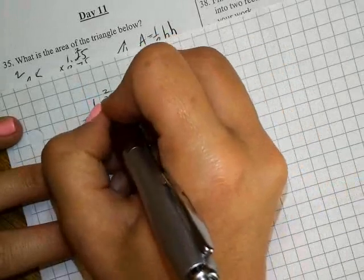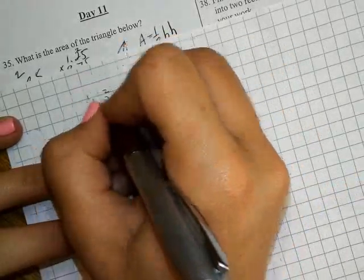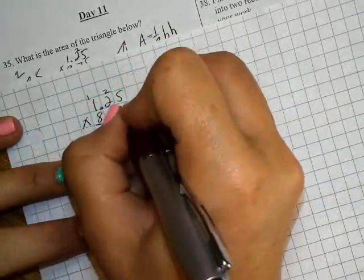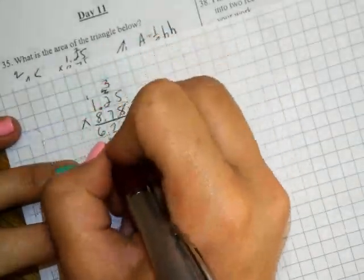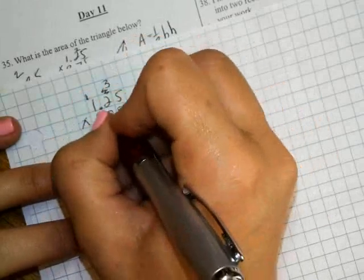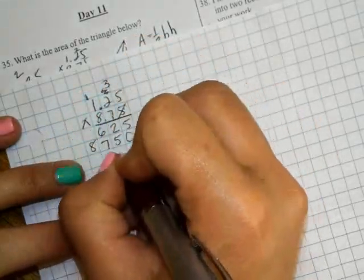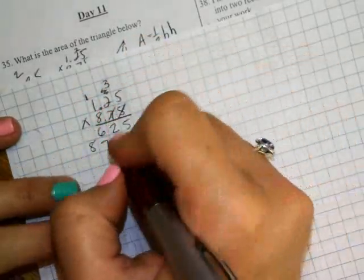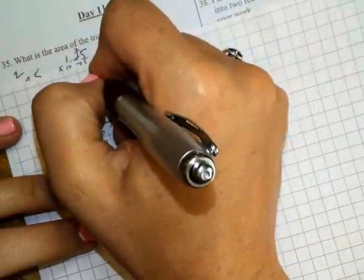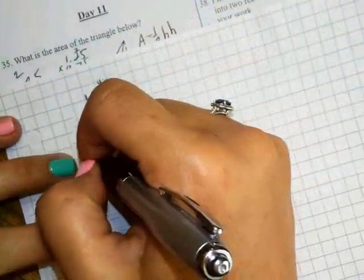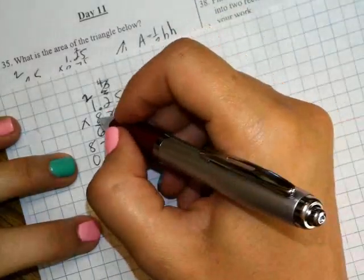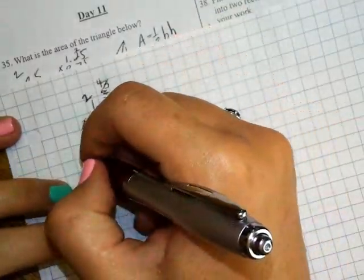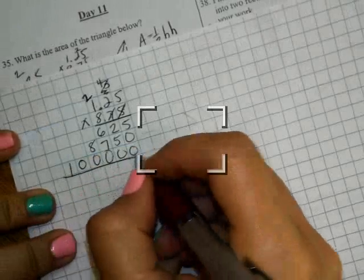The instructor performs step-by-step multiplication: 5 times 5 is 25, carrying digits through each place value. Working through 7 times the multiplicand, then 8 with two placeholders, calculating each partial product.